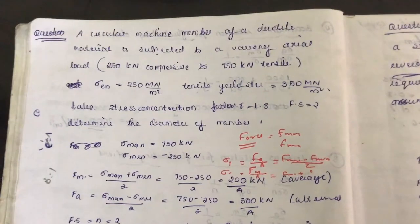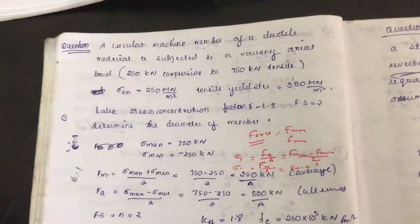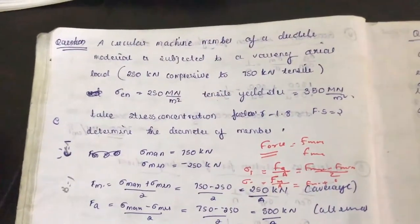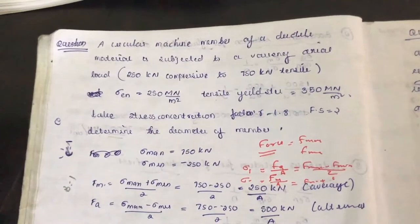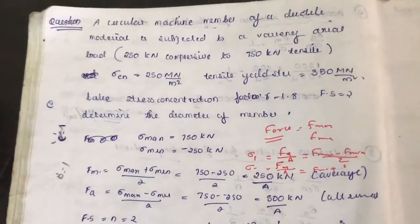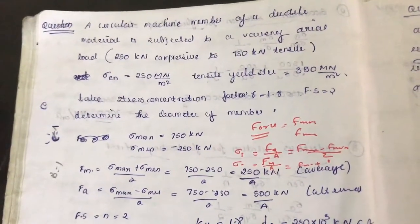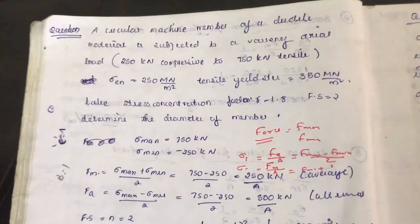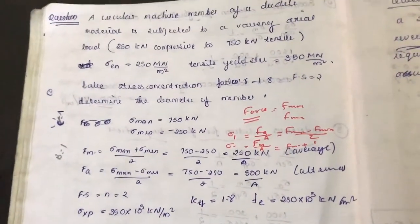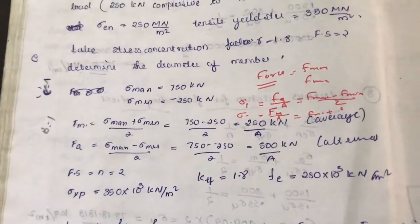A circular machine member of ductile material is subjected to a varying axial load — 250 kN compressive to 750 kN tensile. Sigma En and tensile yield stress are given, along with the stress concentration factor and factor of safety. We are asked to find the diameter of the member. It is an axial load and it is varying.